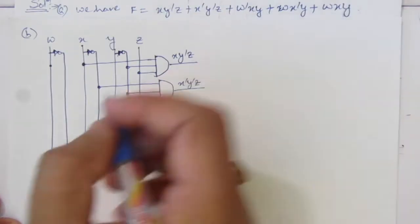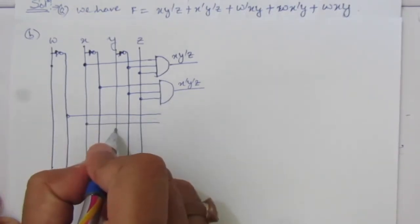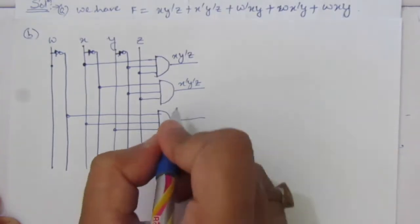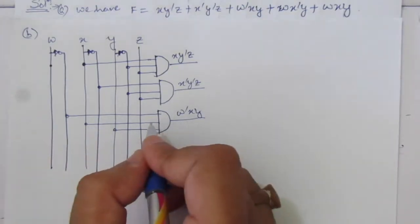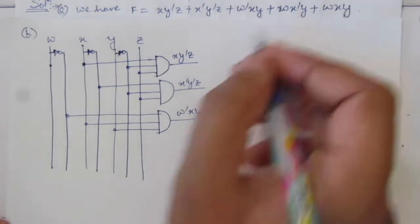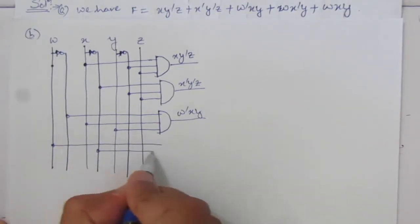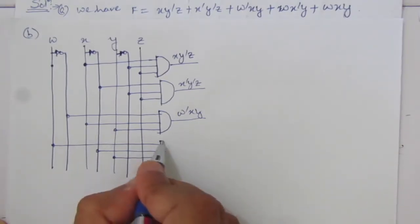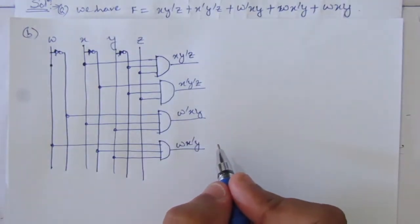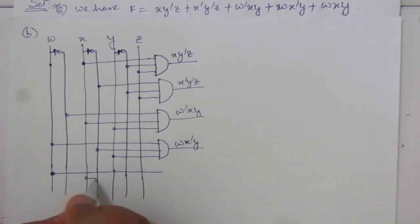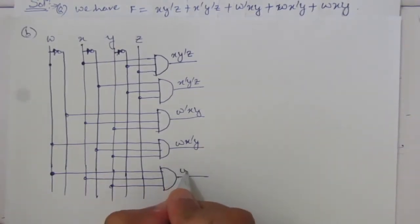Then we use an AND gate for the term W̄XY, with inputs W̄, X, and Y. Then another AND gate for WX̄Y, with inputs W, X̄, and Y. Then another AND gate for WXY, with inputs W, X, and Y.